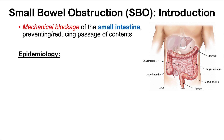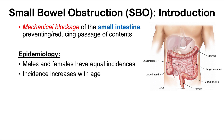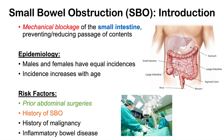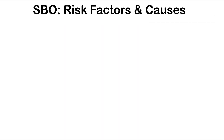Males and females have equal incidences of a small bowel obstruction, and incidence increases with age, because some of the risk factors increase with age as well. Risk factors include prior abdominal surgeries, having a history of small bowel obstruction — as with other things in medicine, a past history increases your future risk — a history of malignancy, particularly gynecological malignancies, and inflammatory bowel disease, such as Crohn's disease.